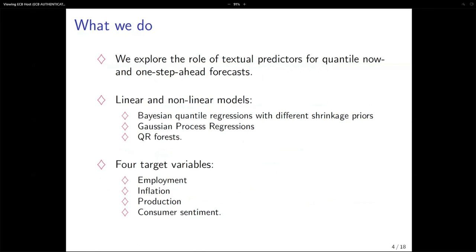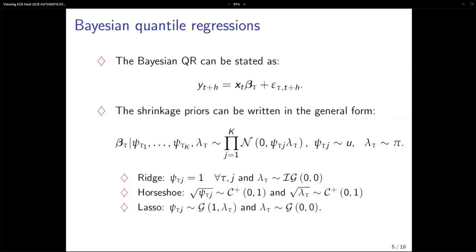In this paper, on the applied side, we explore the role of textual predictors for quantile nowcasts and one-step-ahead forecasts for monthly data. We look at linear and non-linear models. Linear models include Bayesian quantile regressions with different shrinkage priors, and our non-linear methods are Gaussian process regressions and quantile regression forests. As target variables we look at employment, inflation, total CPI, production, and consumer sentiment.